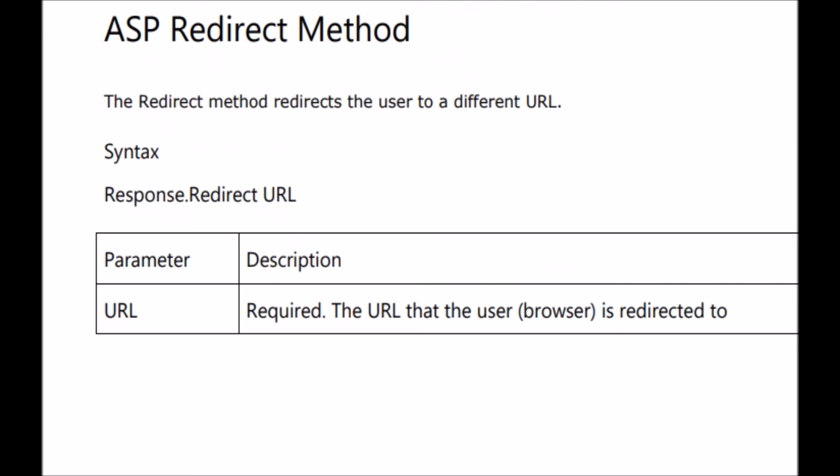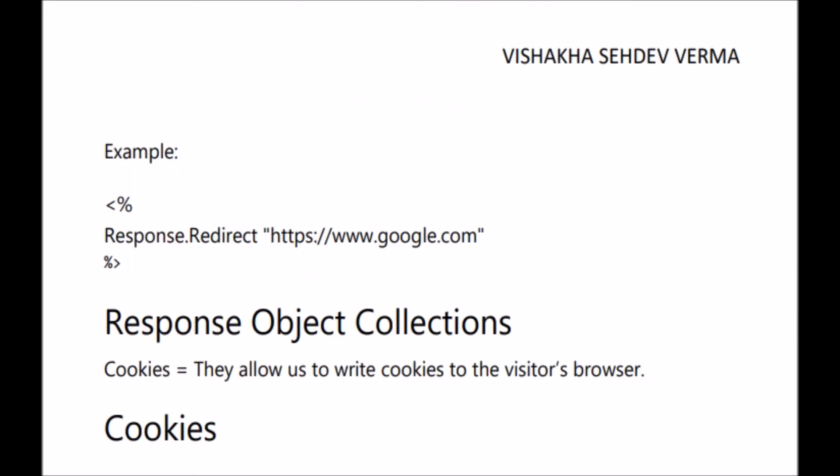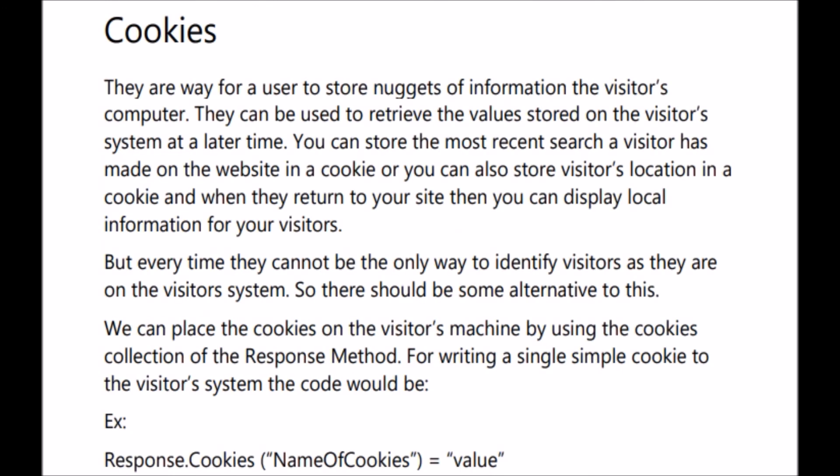The next property is the ASP redirect method, which is used to redirect the user to a different URL. The syntax is response.redirect URL, where URL is required — it is the URL that the user or browser is redirected to. For example, response.redirect www.google.com will redirect the page to Google. That is all about ASP response object methods.